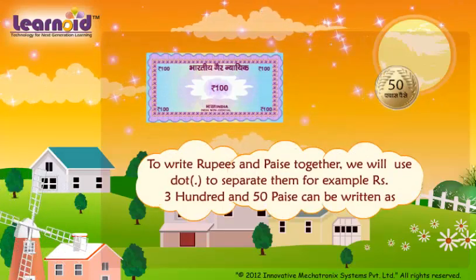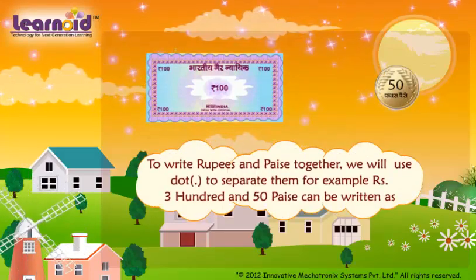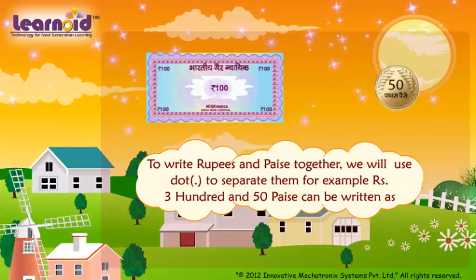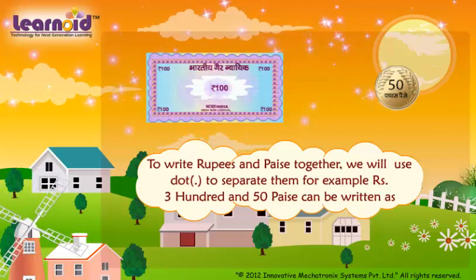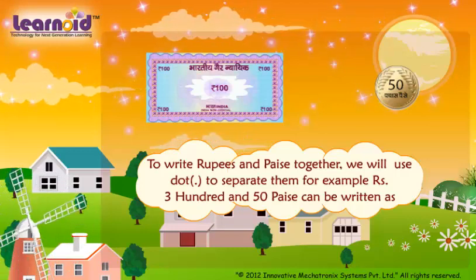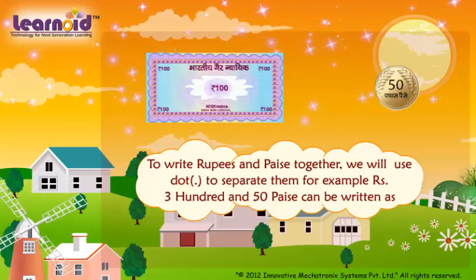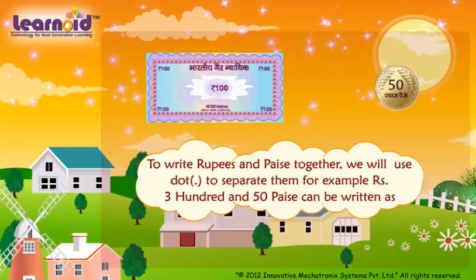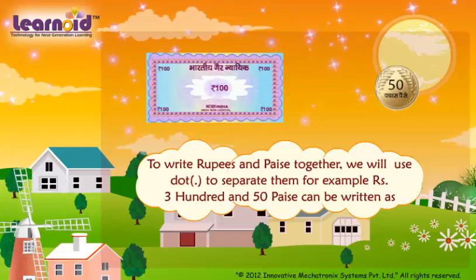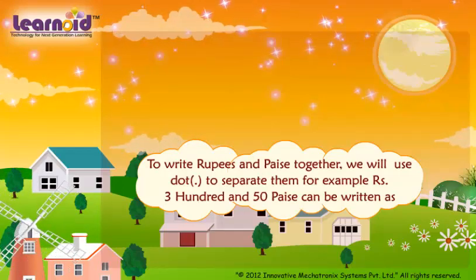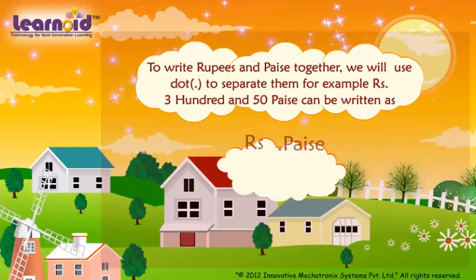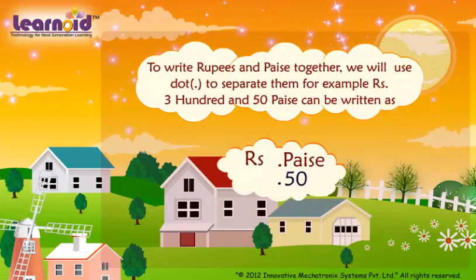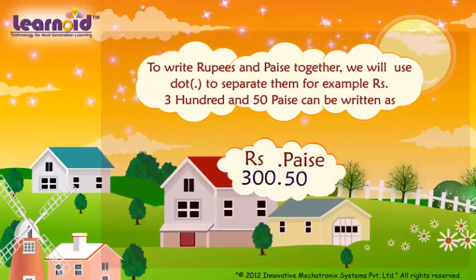To write rupees and paise together, we will use a dot to separate them. For example, 300 rupees and 50 paise can be written as 300.50.